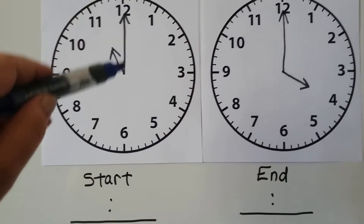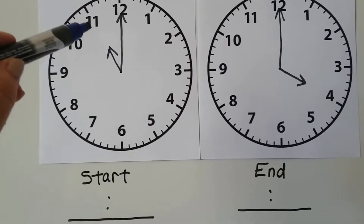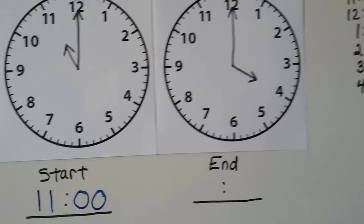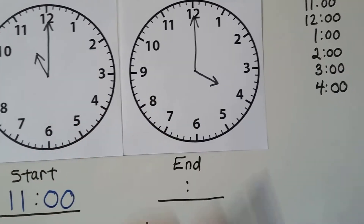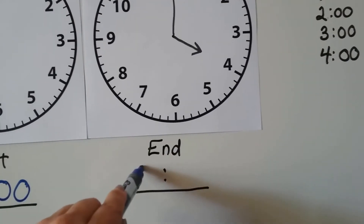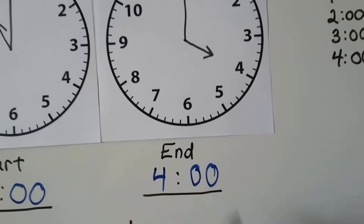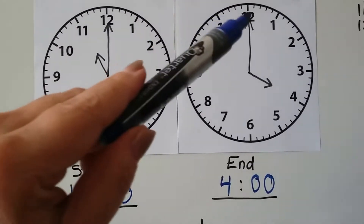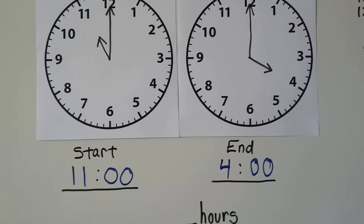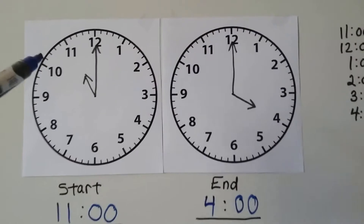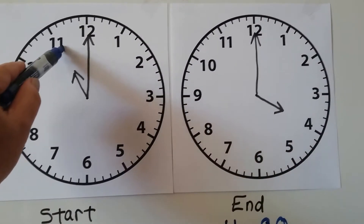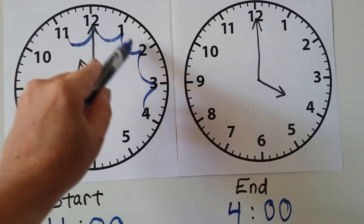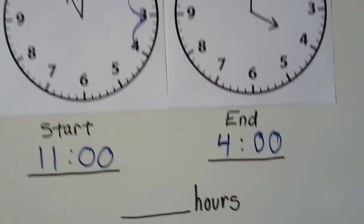Let's try again. The minute hand is pointing to the twelve so it's o'clock, and the hour hand is pointing to the eleven — so the start time is eleven o'clock. The end time: the minute hand is on the twelve and the hour hand points to the four, so it's four o'clock. Since the minute hand is the same on both clocks, we just count the change in hours with hops: eleven, twelve, one, two, three, four — that's five hops, so five hours have elapsed.